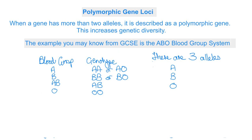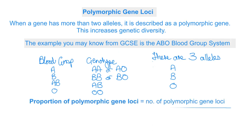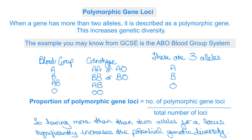The more alleles you have for a particular gene, the more diversity you're going to get. To work this out, you use a simple formula: the proportion of polymorphic gene loci equals the number of loci with more than one allele divided by the total number of loci. Basically, the more different alleles you get for a particular gene, the more genetic diversity you get.